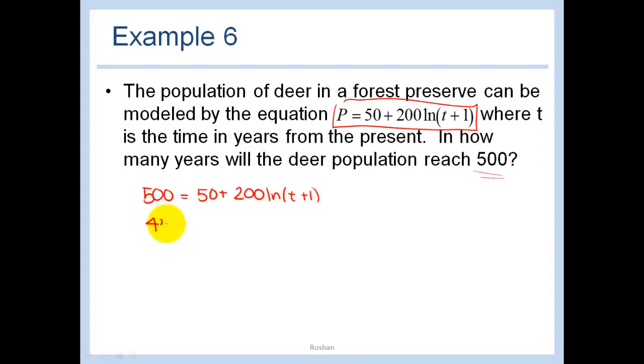50 plus 200 ln of t plus 1. We always want to isolate this first, so let's subtract 50 from both sides. Again, isolate the ln before you do anything. So let's divide both sides by 200. So we have 2.25 is equal to ln of t plus 1.